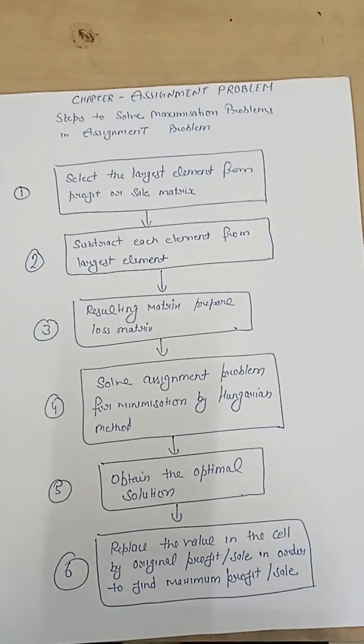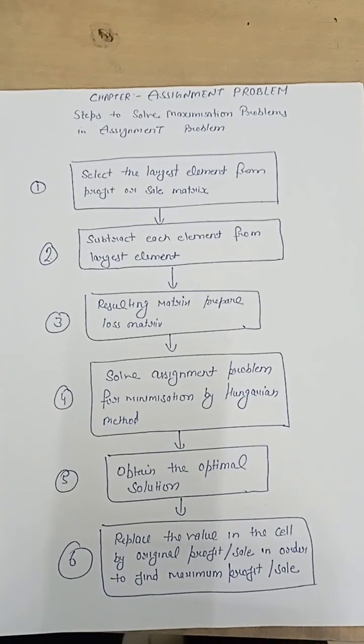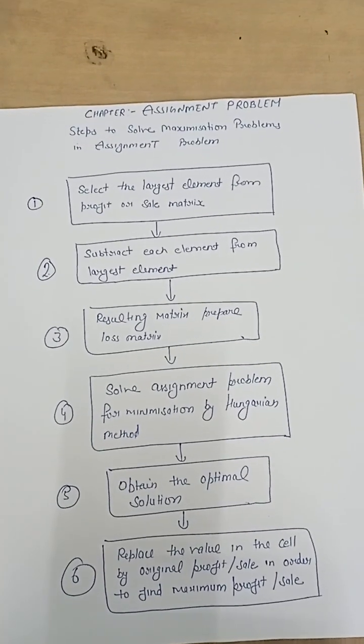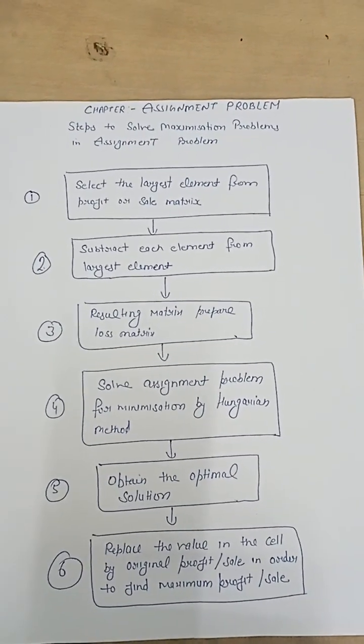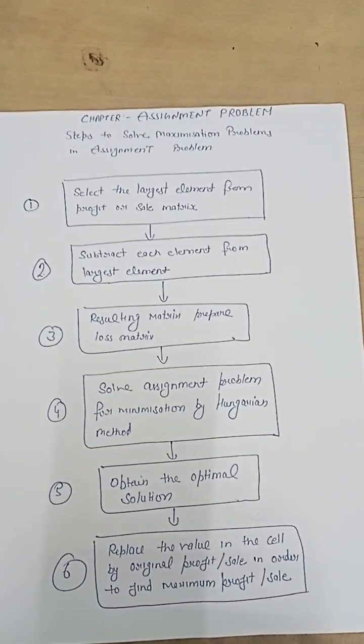To solve such maximization problem, firstly we convert the given maximization problem into minimization problem, and then the minimization problem is solved by using Hungarian method.